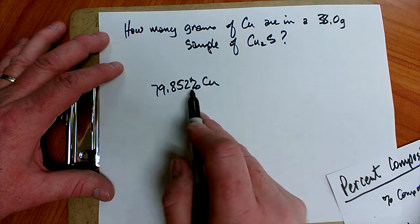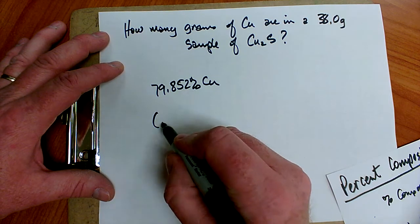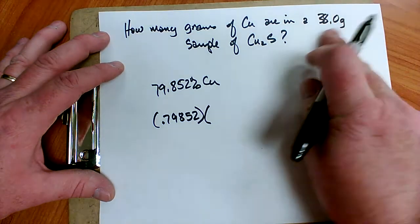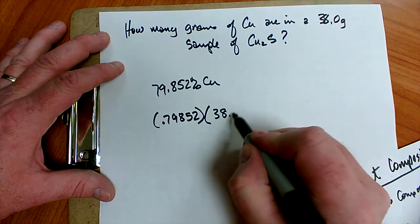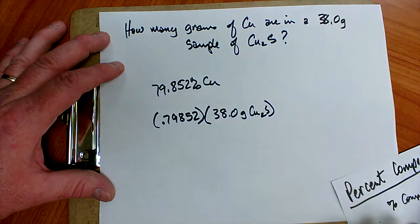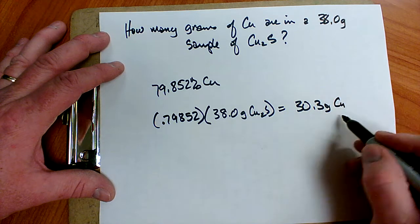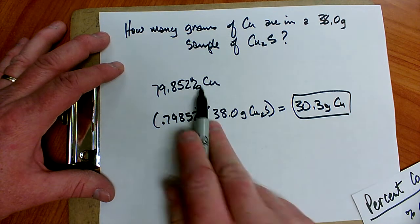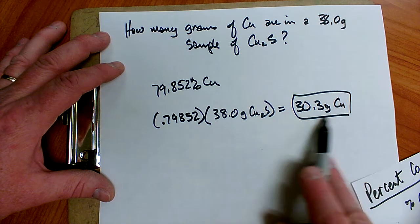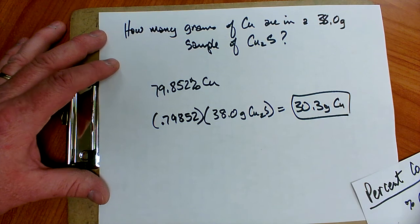So I'm going to take 79.852 percent copper and my 38 gram sample. I'm going to do a little bit of math. I'm going to convert this to a decimal because whenever you do math with percentages, you always convert it to a decimal. So I'm going to take the percentage, 0.79852, and I'm going to multiply that by my total sample size, 38.0 grams. And when I do the math there, I find 30.3 grams of copper. So I simply take my percentage that is copper, my percent composition that is copper, multiply by the sample size, and that tells me the grams or the mass of the copper. And that is how you solve problems involving percent composition.